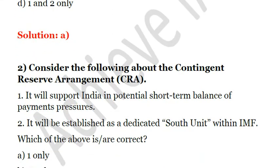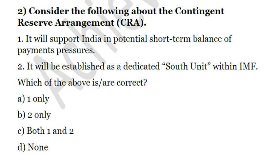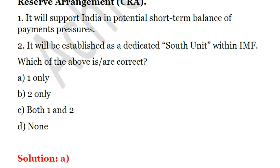The second question is: Consider the following about Contingent Reserve Arrangement. First, it will support India in potential short-term balance of payment pressures. Second, it will be established as a dedicated south unit within IMF. Only the first statement is correct. Contingent Reserve Arrangement is basically of BRICS and is established to tackle issues of balance of payments. So the answer is A, one only.